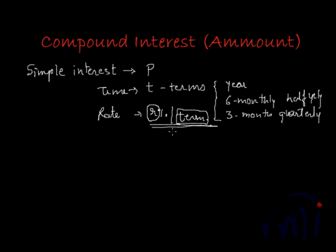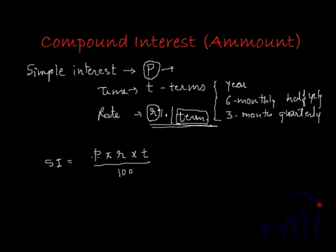Simple interest is calculated term-wise. In the case of simple interest, you always calculate interest on the principal. The formula for simple interest is P multiplied by R multiplied by T, divided by 100 — this divided by 100 is because the rate of interest is in percent. For the first term T equals 1, and interest is P×R/100. For two terms, you multiply by 2 and interest doubles. For three terms, the interest is three times.